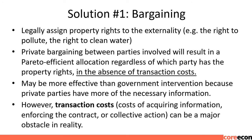Solution No. 1: Bargaining. Legally assigned property rights to the externality — e.g., the right to pollute or the right to clean water — means private bargaining between parties will result in a Pareto efficient allocation regardless of which party has the property rights, in the absence of transaction costs. This may be more effective than government intervention because private parties have more of the necessary information. However, transaction costs — costs of acquiring information, enforcing the contract, or collective action — can be a major obstacle in reality.